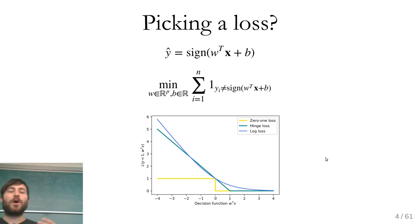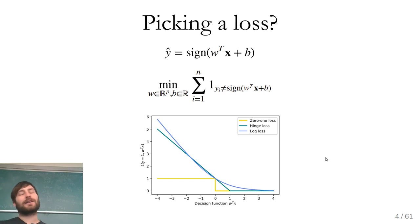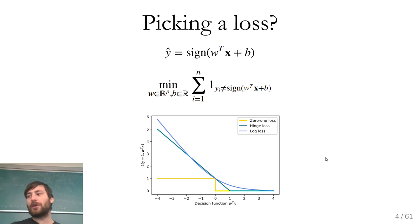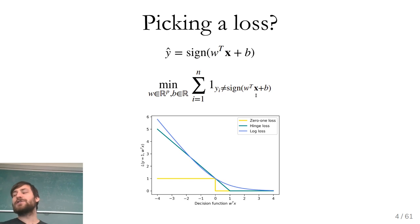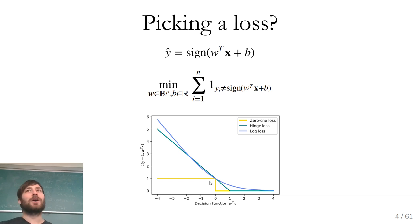I will go over the motivations for these models — they also have separate motivations — but if you look at the math, the main reason why we want to use them is that the most natural thing is impossible. And both of these kind of approach the zero-one loss, which is the thing we actually care about.